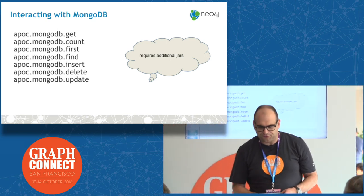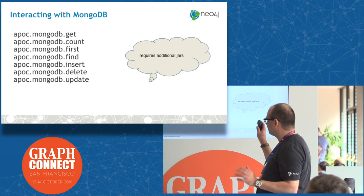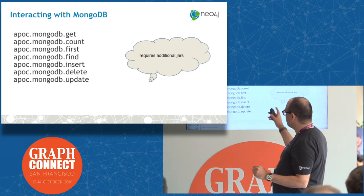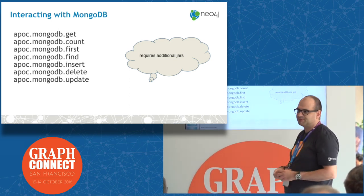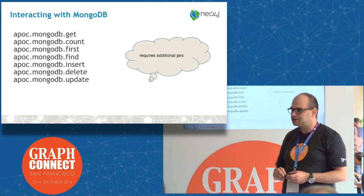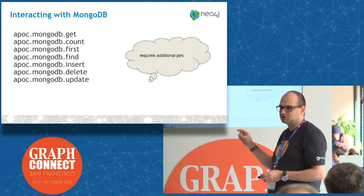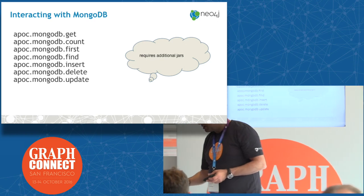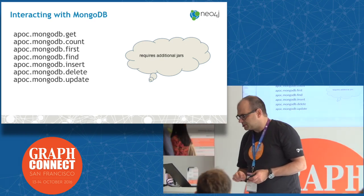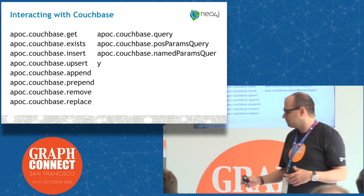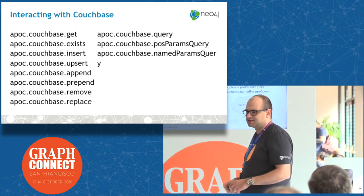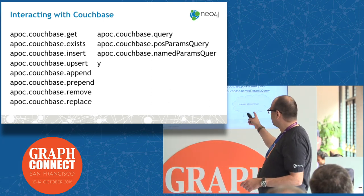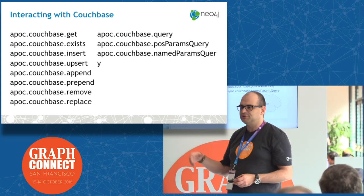There's also integration for MongoDB, which from an API perspective is rather similar to what we saw from Elastic — you can add something, change something. Be aware that if you use these functions, you need to put some additional MongoDB jars into the plugins folder of Neo4j to make these functions available; otherwise you'll get a class not found exception. Pretty similar to MongoDB, there's also an interface for Couchbase — it hits the REST API of Couchbase and does something with it. These functions also require that you put some Couchbase jars into the plugins folder.